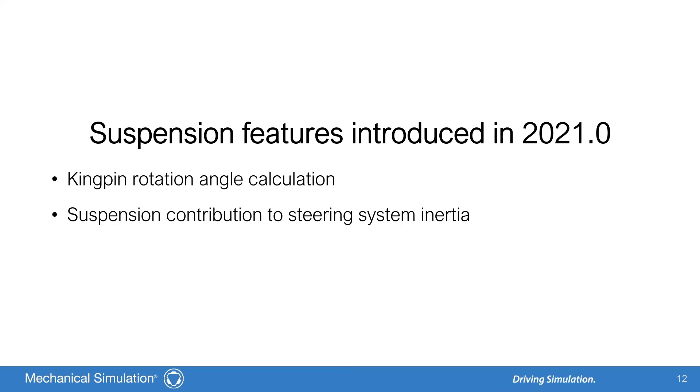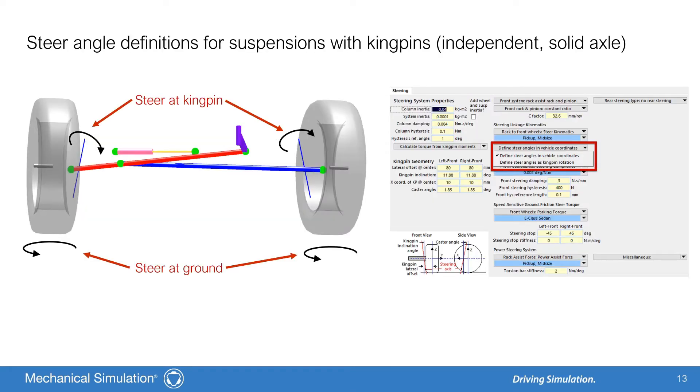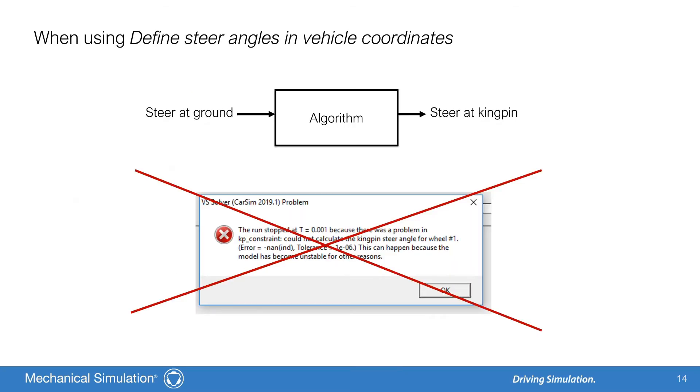It's now time to move on to improvements introduced in CarSim and TruckSim 2021.0, a new kingpin rotation angle calculation, and a suspension contribution to steering system inertia. For suspensions which use a fixed kingpin axis and have steer angles defined in vehicle coordinates, the VS Math model converts the steer kinematics from the tables into an equivalent rotation about the inclined kingpin axis. This kingpin rotation angle is then used as a constraint in the multibody suspension model.